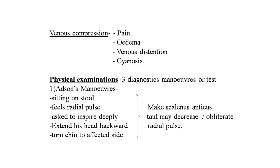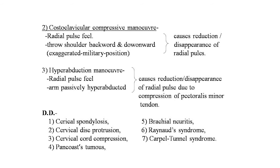Second, the costoclavicular compression maneuver: the patient's radial pulse is felt while the patient throws shoulders backward and downward in an exaggerated military position, causing reduction or disappearance of the radial pulse due to compression of the subclavian artery between the clavicle and the first rib; a subclavian bruit may be heard simultaneously. Third, the hyperabduction maneuver: the affected arm is passively hyperabducted, causing reduction or disappearance of the radial pulse due to compression by the pectoralis minor tendon; an axillary bruit can be heard near the pectoralis minor tendon.